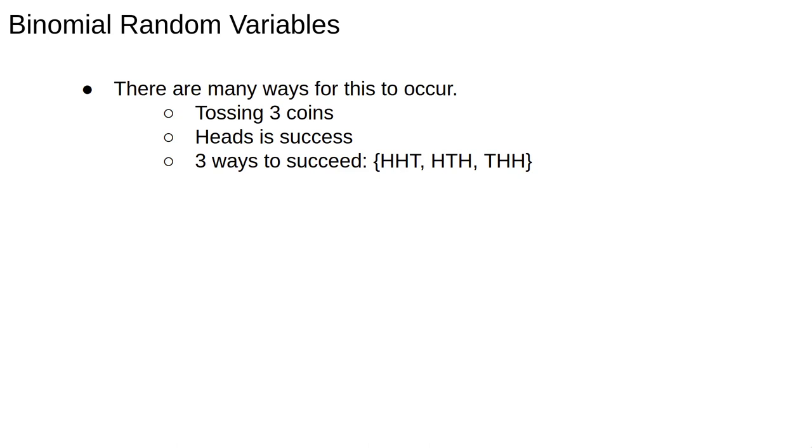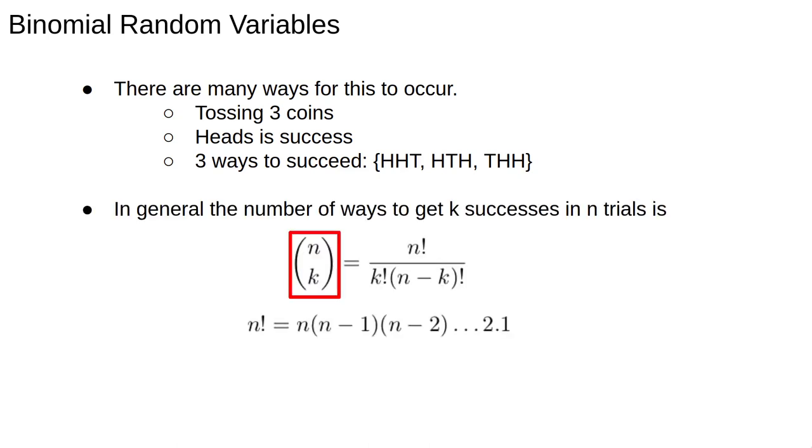In the coin tossing example in three coin tosses we might get two heads in three ways: heads heads tails, heads tails heads, or tails heads heads. In general the number of ways to get k successes in n trials is n choose k which is how you read this symbol.